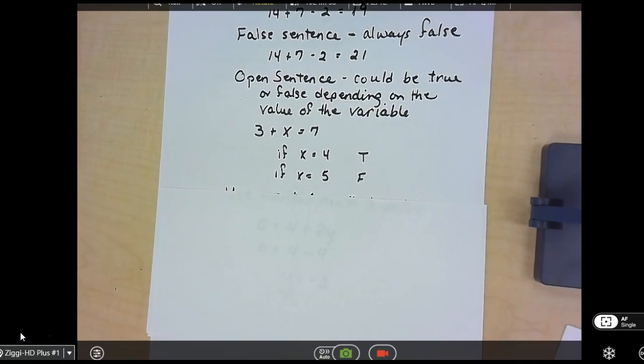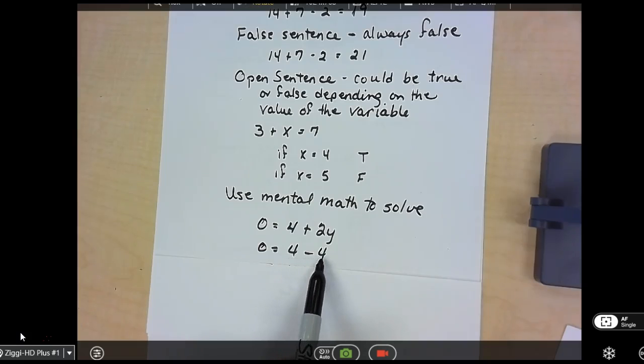And then they want you to solve using mental math. So if you're looking at an equation, 0 is equal to 4 plus 2Y. I know I would have to have 4 minus 4 to equal 0. So my 2Y would have to be negative 4. And I can realize that Y would have to be negative 2. And you just solve it in your head. Right now, we're not going to do all the steps. And that ends 1-8.